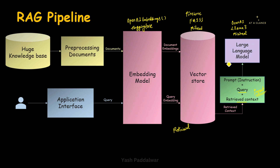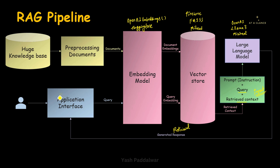The large language model will generate a response which will be the accurate answer to the user query. The output of this large language model will then be given to the application interface. The generated response is passed on to the application interface, and the query that was raised by the user is now solved — the solution is given to the user. I hope the entire Retrieval Augmented Generation pipeline is clear. This is a basic RAG pipeline through which we can solve multiple use cases, and nowadays it is becoming very popular. Every single company is now using this RAG pipeline for multiple use cases.